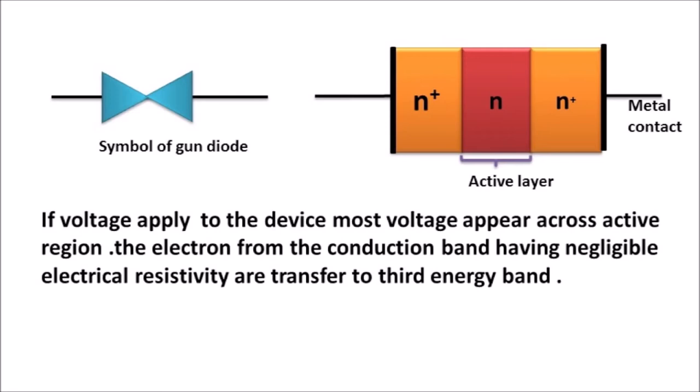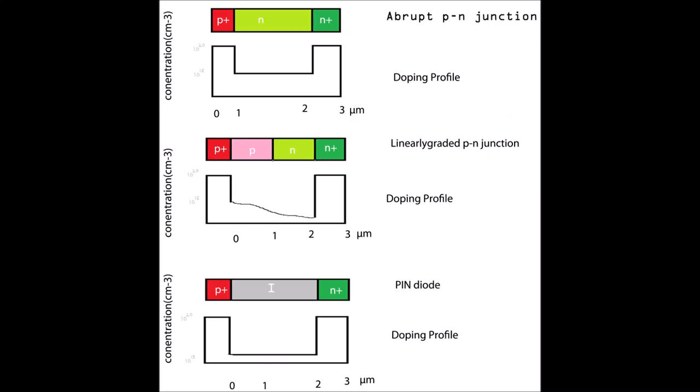IMPAT diode. An IMPAT diode, Impact Ionization Avalanche Transit Time diode, is a form of high-power semiconductor diode used in high-frequency microwave electronic devices. They have negative resistance and are used as oscillators and amplifiers at microwave frequencies.